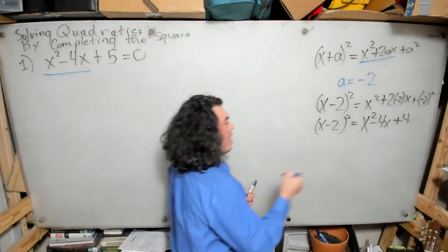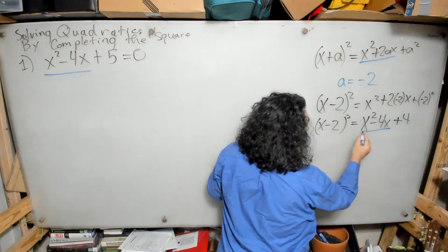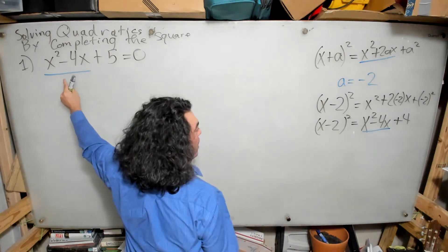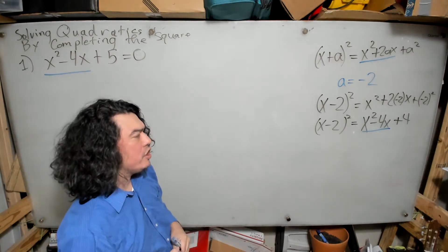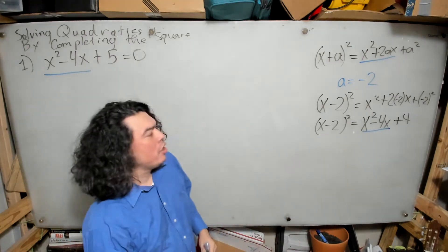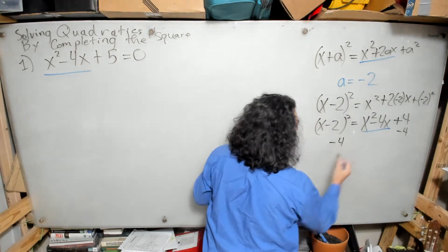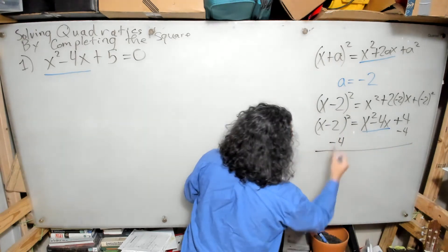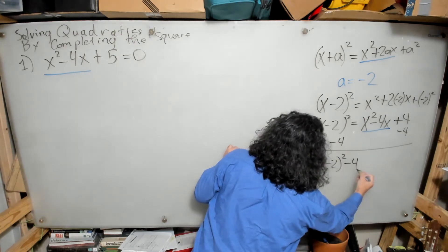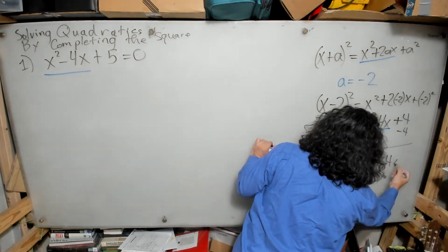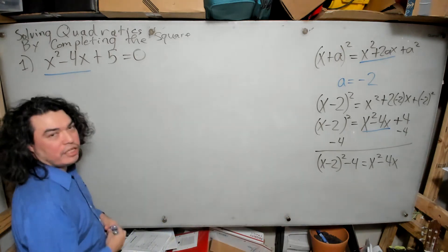This piece exactly matches the piece I wanted to match. Since this is an equation, I can subtract the 4 from the right-hand side. This allows me to write x minus 2 squared minus 4 equals x squared minus 4x.